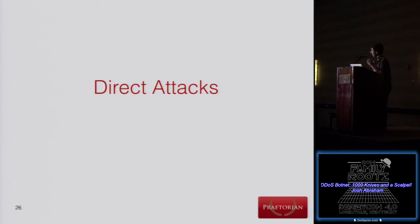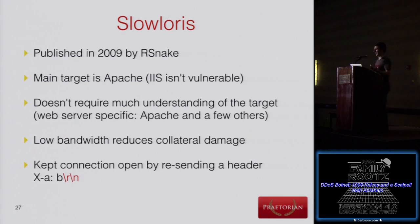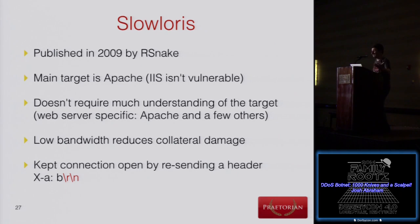Now we'll go through specific direct-access attack vectors — instead of reflection or spoofing, we connect to targets directly, or possibly through Tor. The first vector came out in 2009 from rsnake: SlowLoris. It's still useful today — you can set up an Ubuntu 14 LTS system and bring it down with one command. Fast, low resource requirements. It focuses mostly on Apache and a few other web servers. If that's your target, it's quick — well documented and tested.